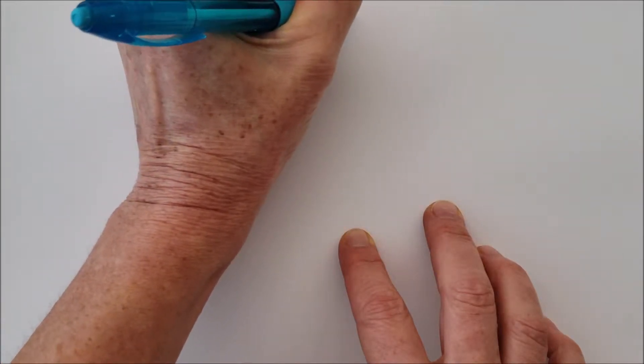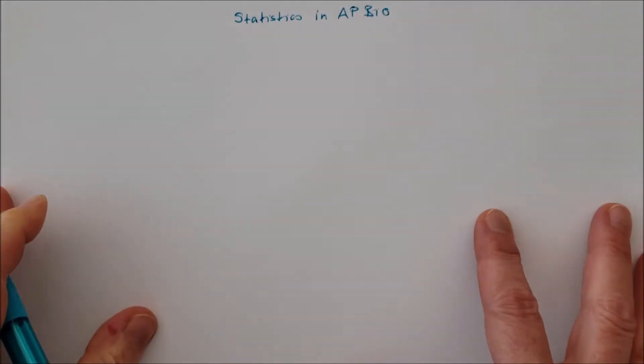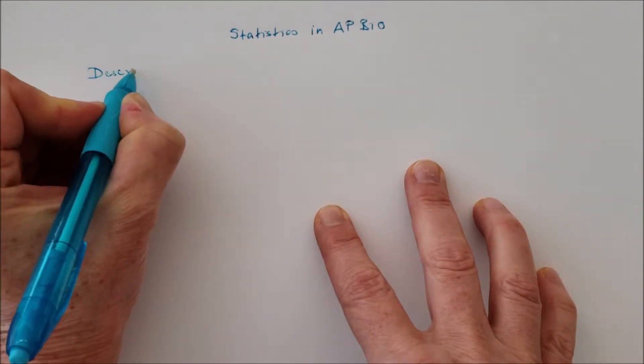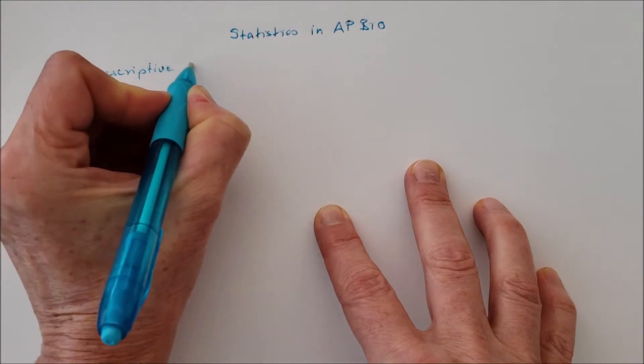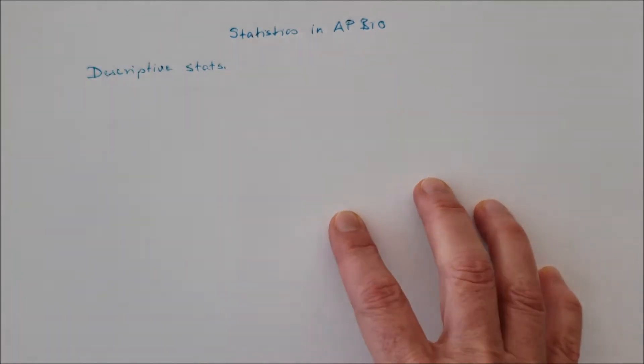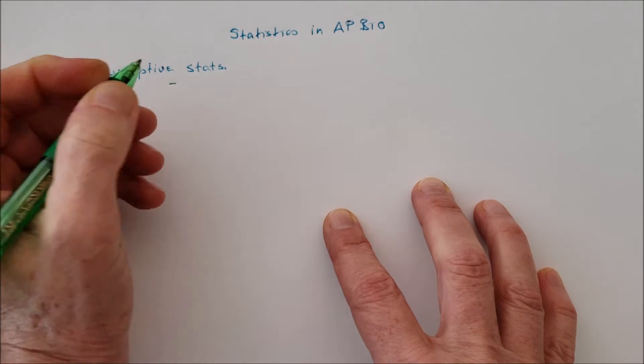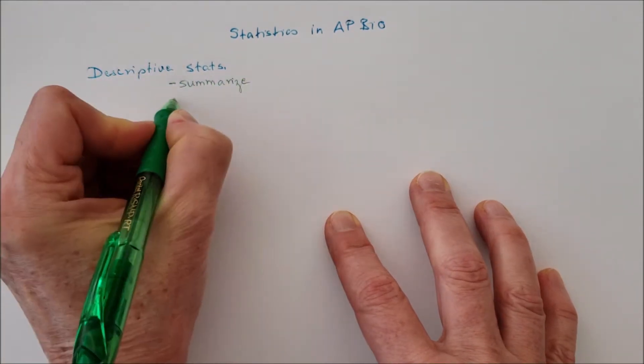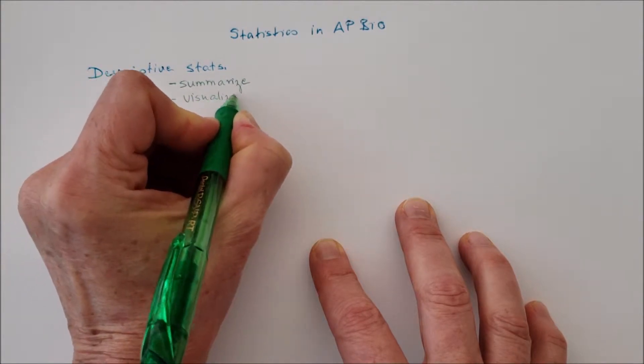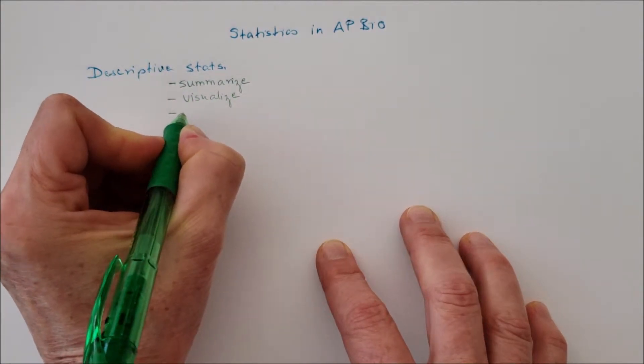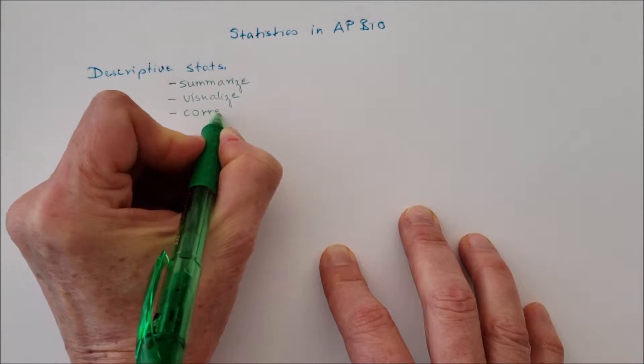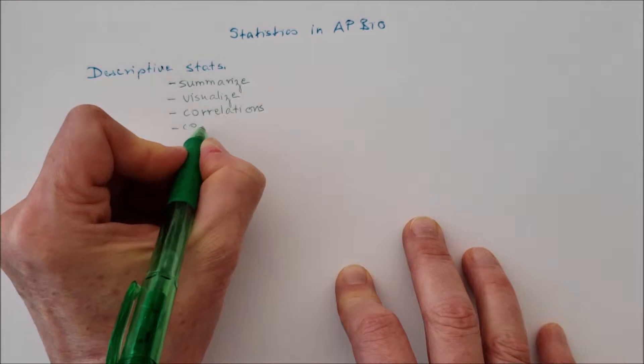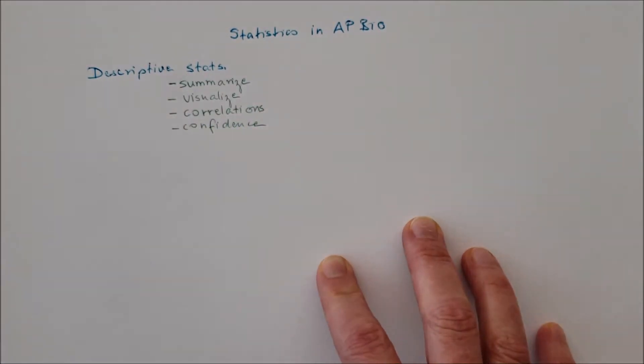Data and its analysis in AP Biology. This is the basic statistics, what you have to be familiar with. Statistics can be descriptive statistics and it summarizes the data. It also visualizes the variation in the data, identifies correlations between the different variables, and identifies confidence interval for the values.